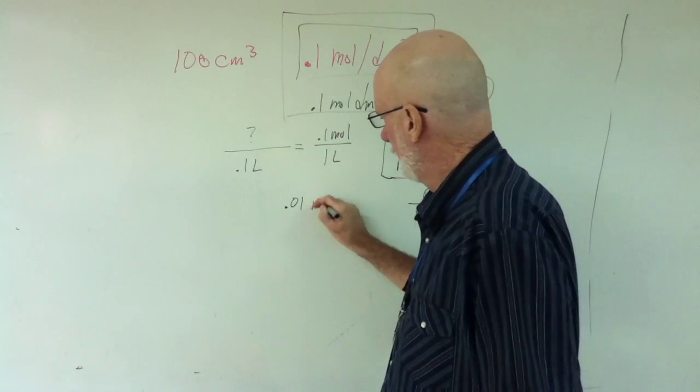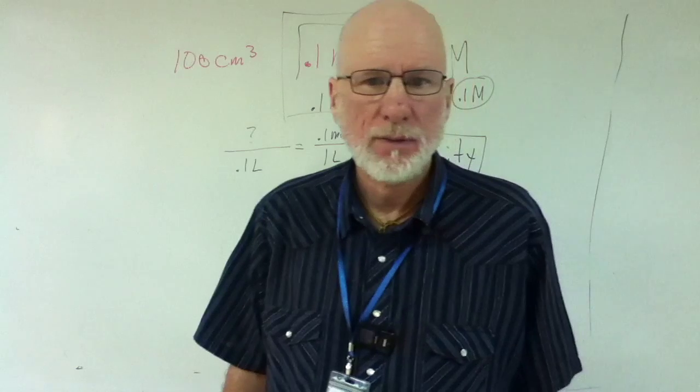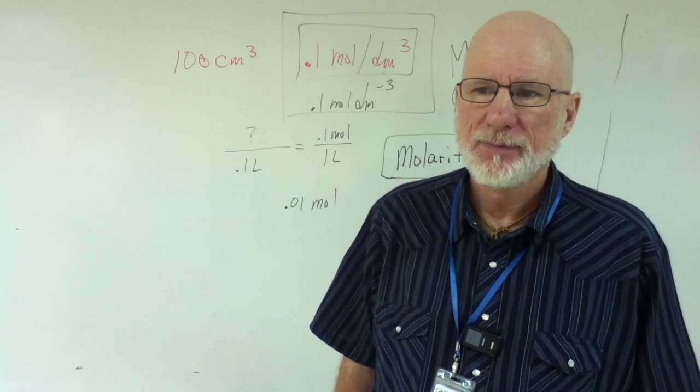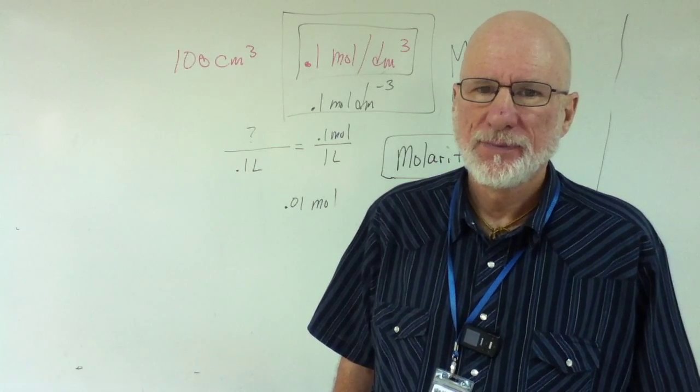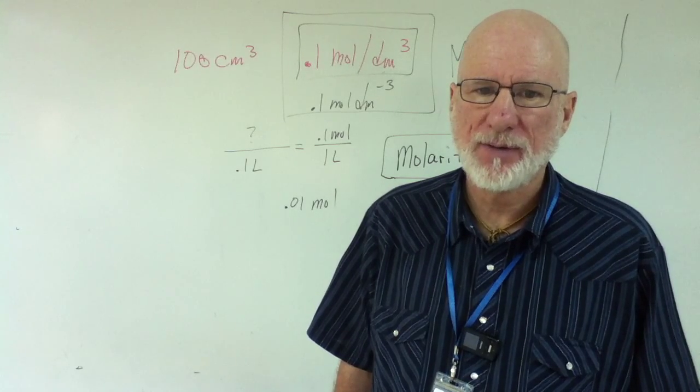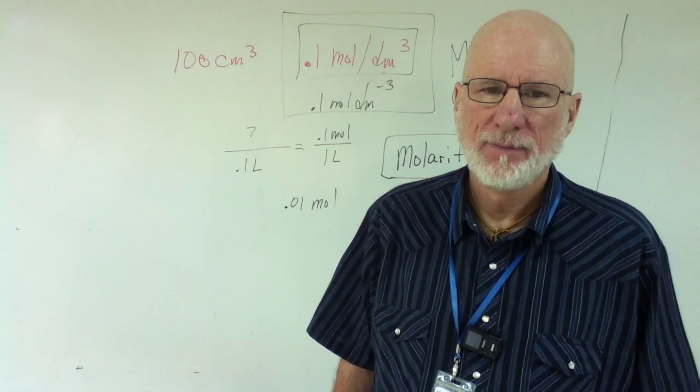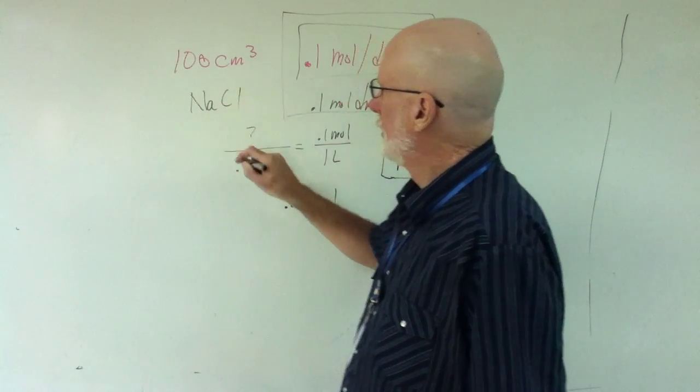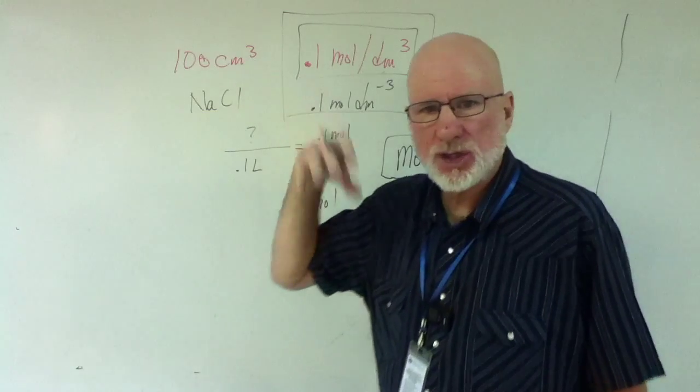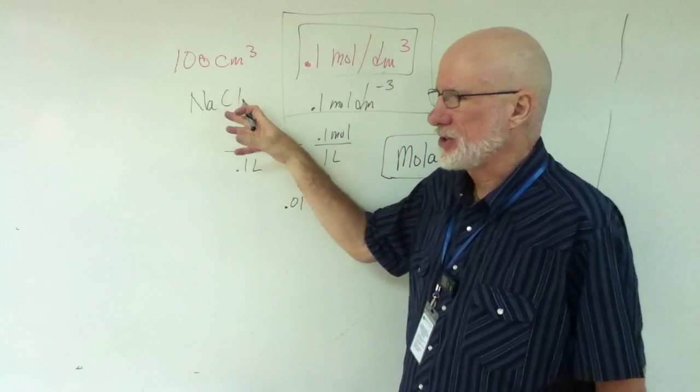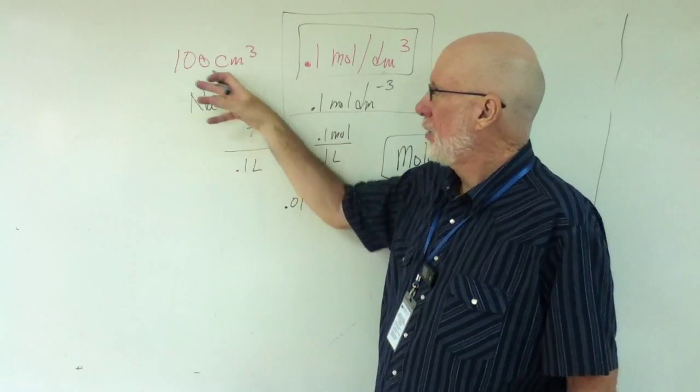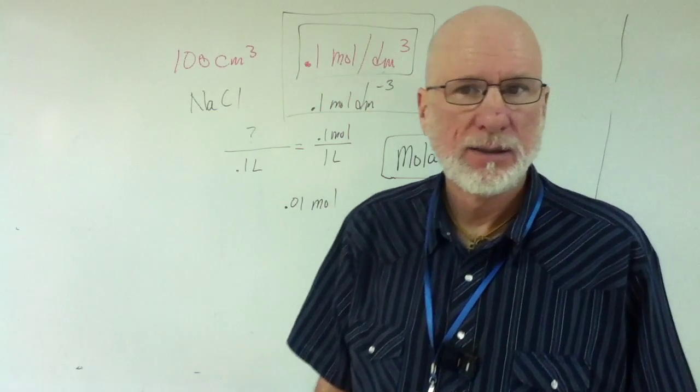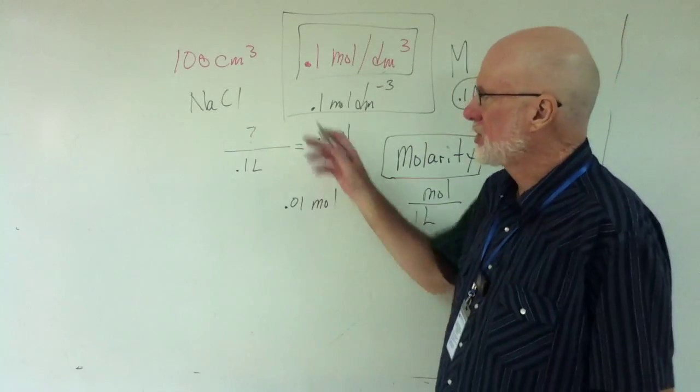Let's read the problem out loud. Lauren, read the problem out loud. Explain how to make 100 cubic centimeters of a 0.1 molar per cubic decimeter solution of sodium chloride. Sodium chloride. So NaCl. So 100 cubic centimeters. They want to describe how to make 100 cubic centimeters of a 0.1 molar per cubic decimeter solution of sodium chloride.